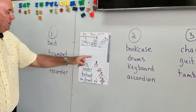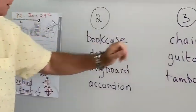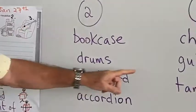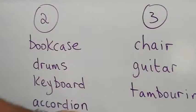And then, picture number three. What do we have? We have a chair, we have a guitar, and we have a tambourine.